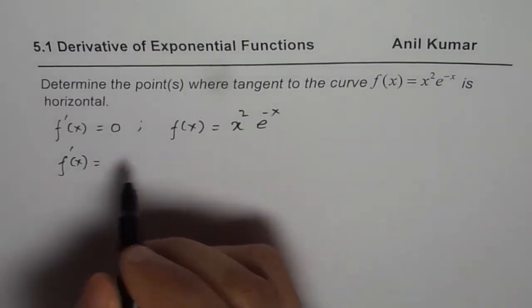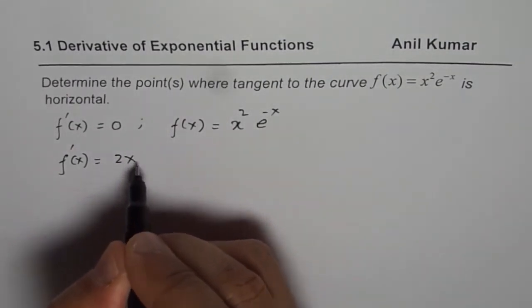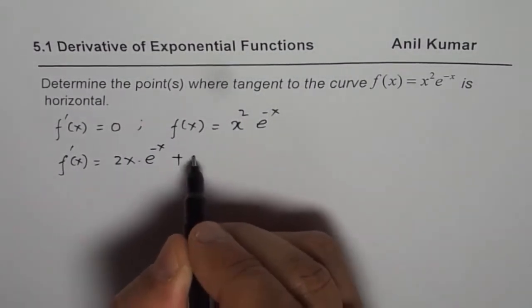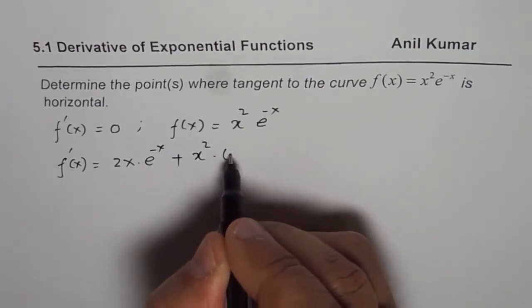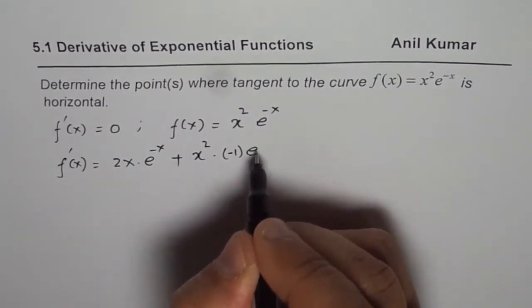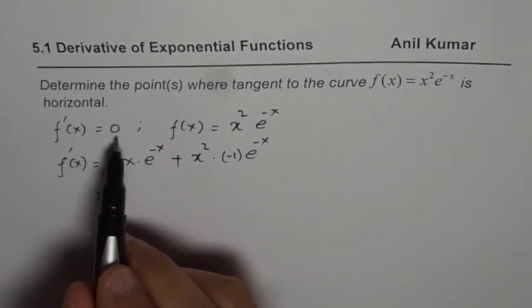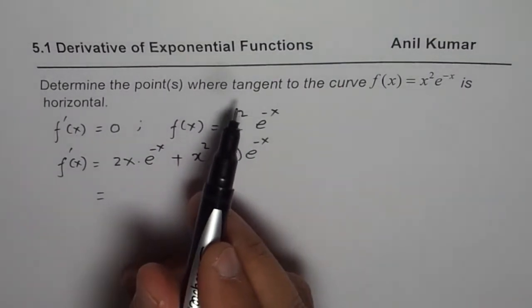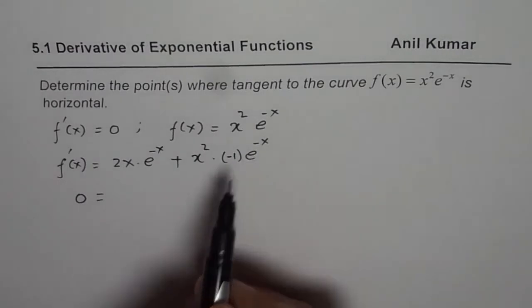Derivative of the function is derivative of the first function which is 2x times e to the power of minus x plus the first function times derivative of the second function which is minus 1 times e to the power of minus x. Now, to find the points where it has horizontal tangent line, it means derivative should be 0. So I am equating that to 0 and then we will simplify.